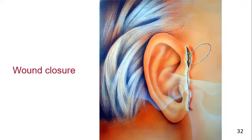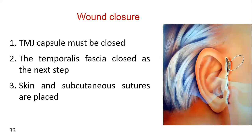Subcutaneous tissues are closed with resorbable sutures. No sutures deeper than subcutaneous tissues are required. The skin is closed with a running subcuticular suture, which makes removal simple and allows a delay in removal if necessary. Here you can see the closure of the pre-auricular skin incision with a running subcuticular suture. A pressure dressing and/or drain is usually applied according to the surgeon's preference. If the TMJ capsule has been incised to access the condylar head, it must be closed as the first step, followed by closure of the temporalis fascia, then the skin and subcutaneous sutures.